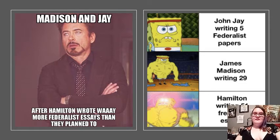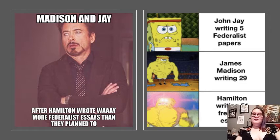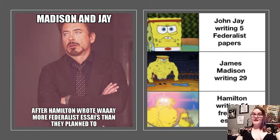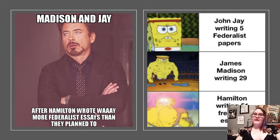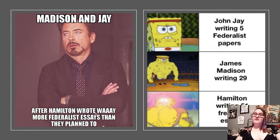In Federalist 10, James Madison warns against the dangers of factions. A faction is a group of citizens with a common interest — something like the NRA today. They promote their own special interests, which is good for them, but they're often at odds with each other and they can work against public interest in favor of their own interest. Madison says that liberty means there will be factions, but we can control the effects of them through Republican government, which is different than a direct democracy.